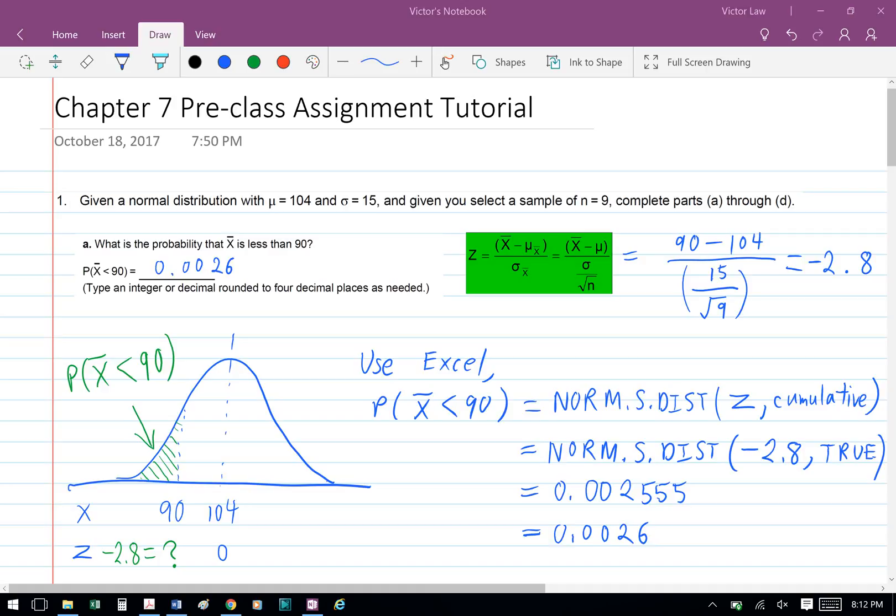We substitute Z with negative 2.8, and for cumulative we put TRUE, and then we get an answer of 0.002555. Rounding to four decimal places, we get 0.0026. So that's Part A.